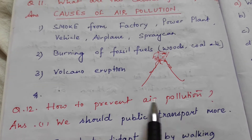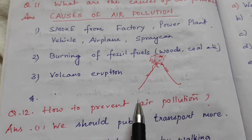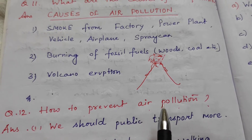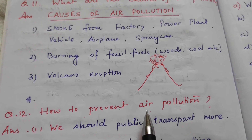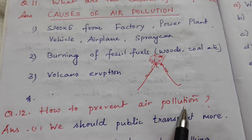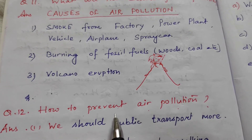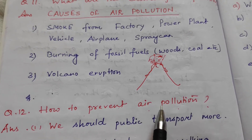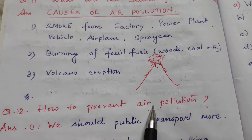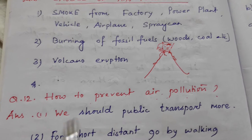Question number 12: How to prevent air pollution? We all of us know that if we take polluted air we will get sick. And what are the airborne diseases? The main disease is asthma.